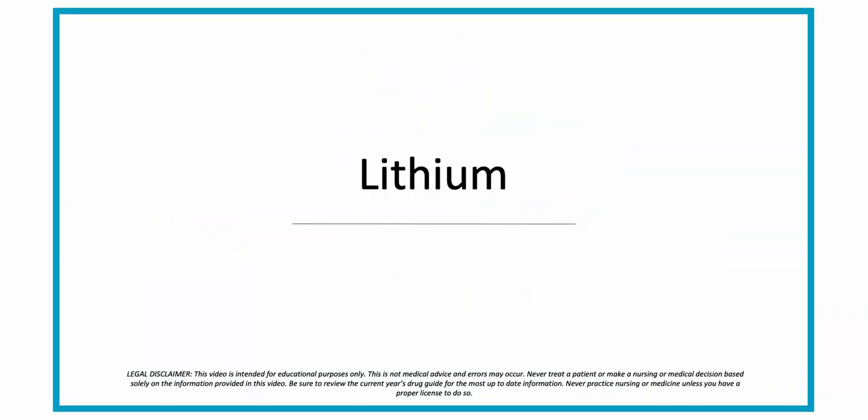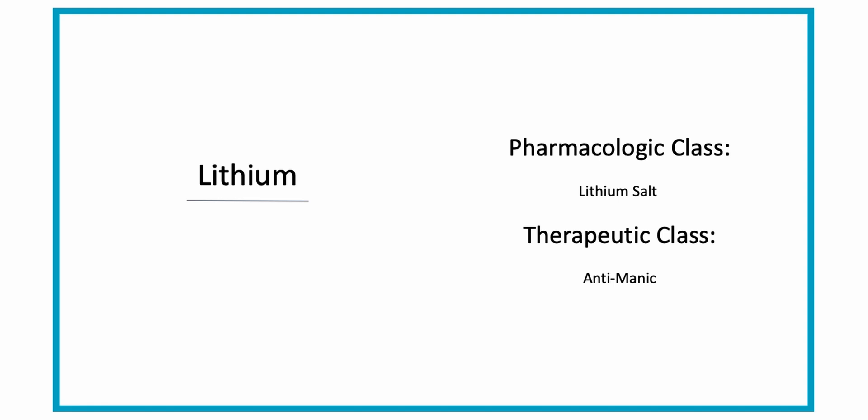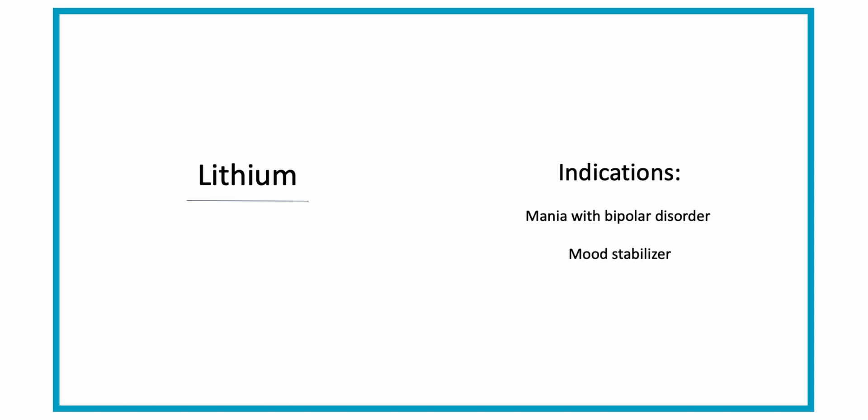We're going to talk about lithium. The generic name is lithium and the trade name is Lithobid. The pharmacologic class is a lithium salt and the therapeutic class is an anti-manic. Lithium is indicated as a mood stabilizer and it's used to prevent and treat episodes of mania associated with bipolar disorder.